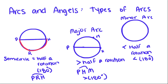A major arc is greater than half a rotation. So if I go from P to H to M, see how this arc is bigger than the semicircle arc? That's called a major arc.